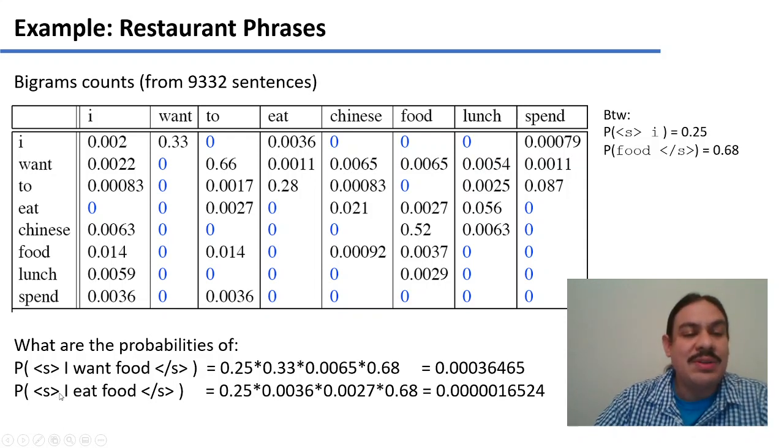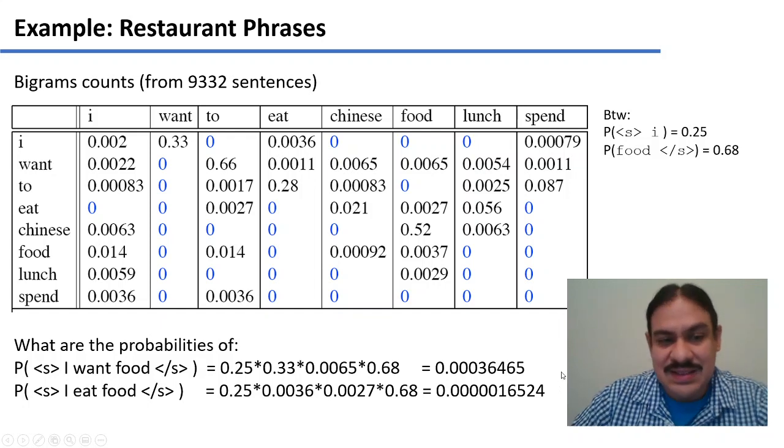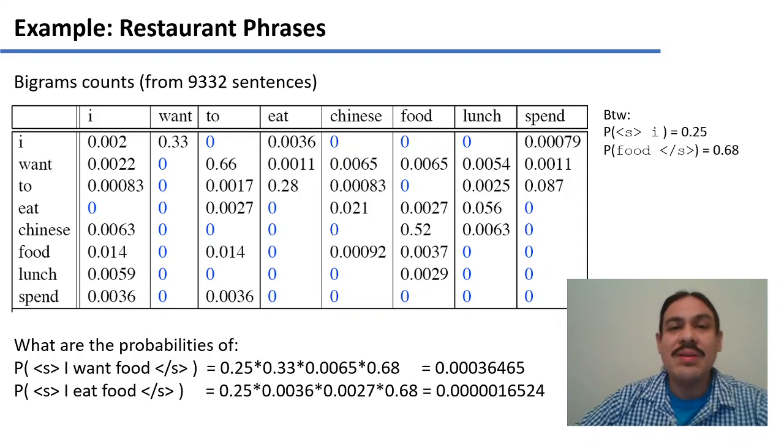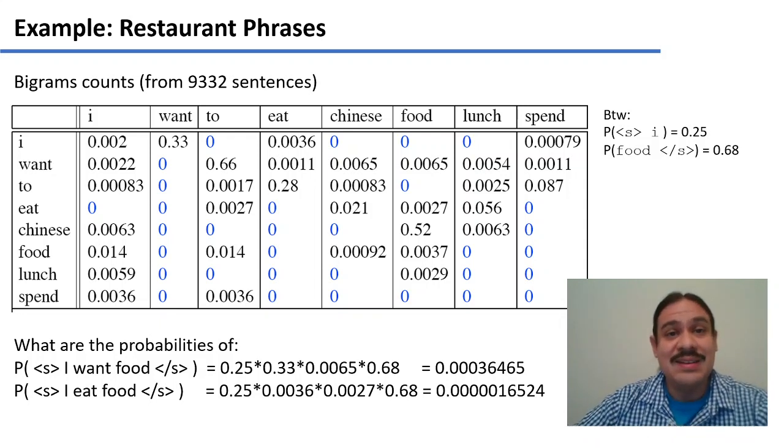Likewise, the probability of I eat food is the probability of the start plus I, I plus eat which is here, eat food which is here, plus food and end of sentence. The multiplication is this. As you can see, the first sentence is about two orders of magnitude more likely than the second sentence. Both sentences are correct, and their probabilities are greater than zero, but one of them is much more likely given the corpus, and it's I want food.